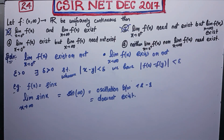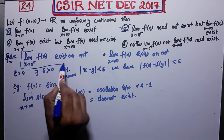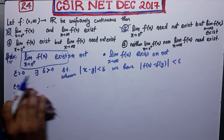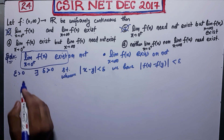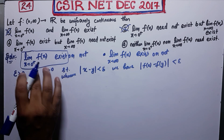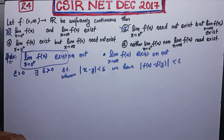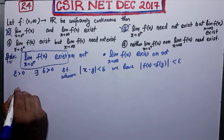Now I will prove that the limit as x→0+ of f(x) actually exists. To check the existence of this limit, I am going to use the sequential definition for the existence of a limit.